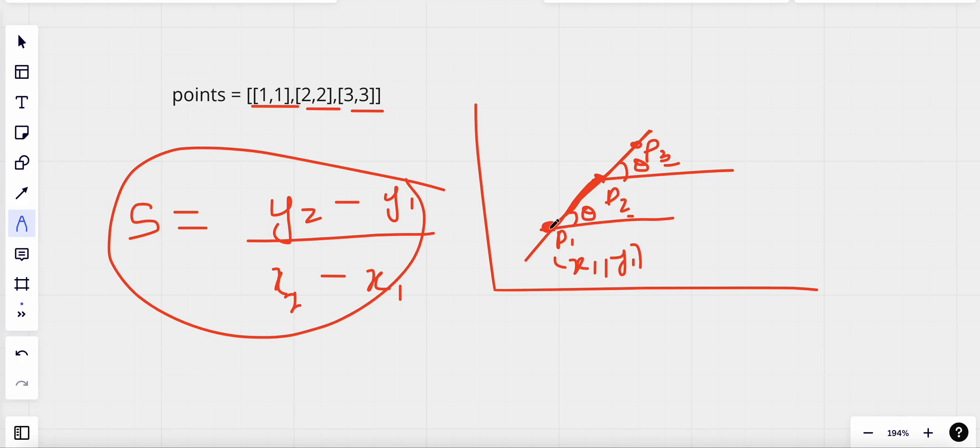slope between this point and this point. These two points would also give us the same angle theta, right? For the count of this angle, we will use a map to store the value of the number of counts that we have identified so far. So that